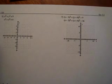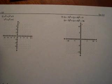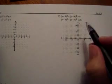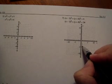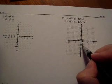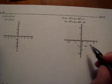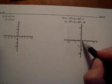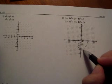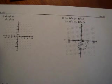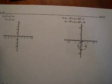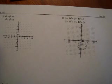For number seven, look at the first inequality. Replacing greater than with an equal sign, I recognize it's a circle centered at (1, -4) with a radius of 3. I plot three units in each direction from the center. Since the inequality is strict greater than, I draw it as a dashed circle. Testing a point shows I should shade outside this circle.